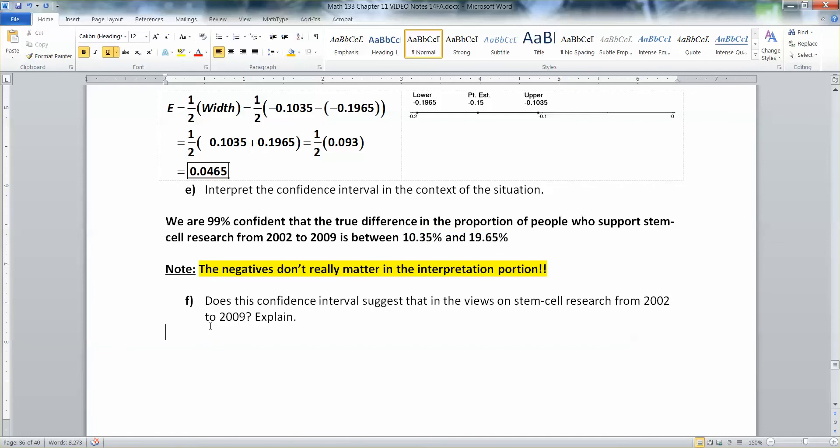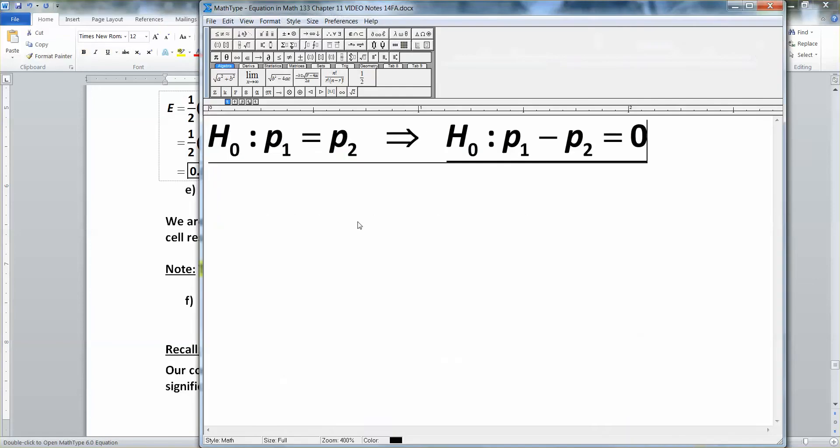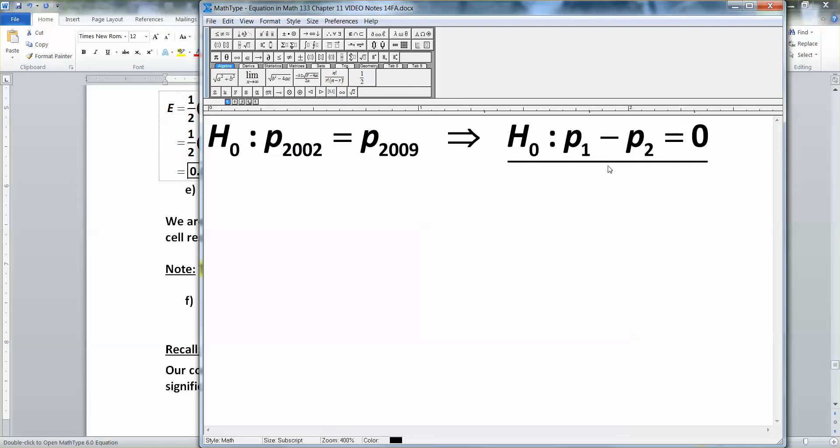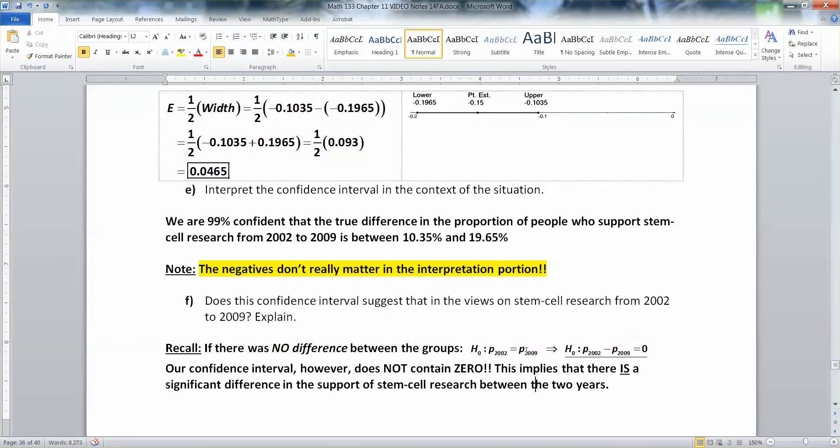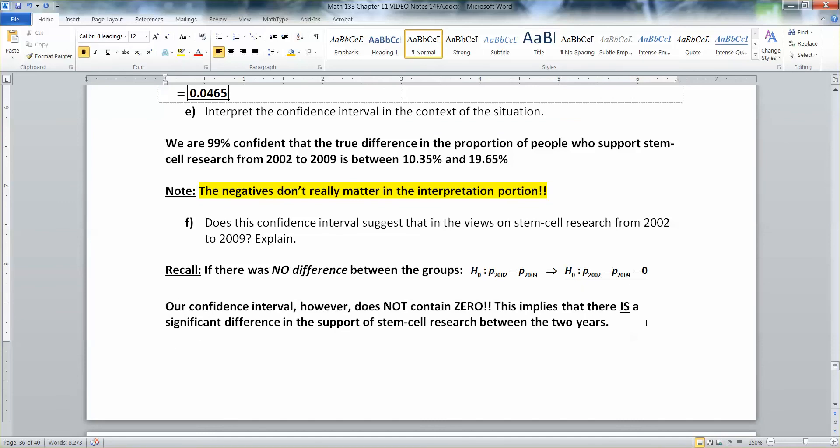Now, if it's that much, doesn't that imply that there is a significant difference in those views from those two years? The answer is yes, absolutely. Remember, if there was no difference in the groups, that would mean that they were equal to each other. And that means when you subtract the proportion for the second group from the proportion from the first group, you would get zero. So our confidence interval does not contain zero. And that implies that there is a significant difference in the support of stem cell research between the two years.